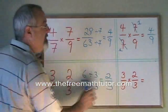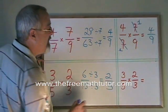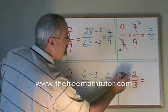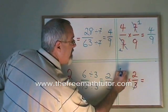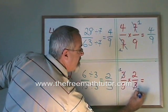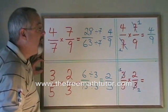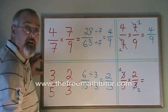Now when I do the same question with canceling, I see a 3 on the top, a 3 on the bottom. I cancel both of them. I replace them both with ones. Because what I'm really doing is I am dividing each of them by 3, their common factor.